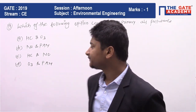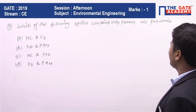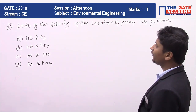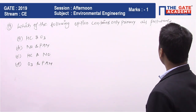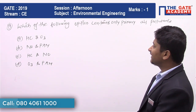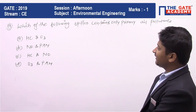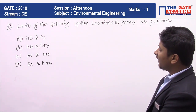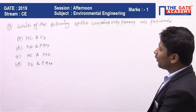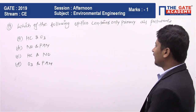This question is from Environmental Engineering subject, it is for one mark. The question is: which of the following options contains only primary air pollutants? The options include: HC (hydrocarbon) and ozone; NO and PAN (peroxy acetyl nitrate); HC and NO; ozone and PAN.